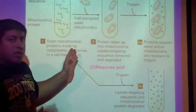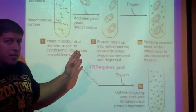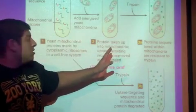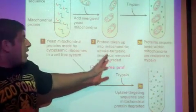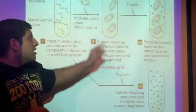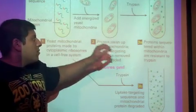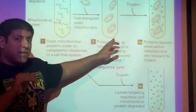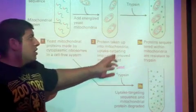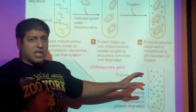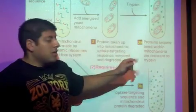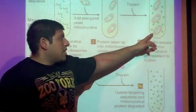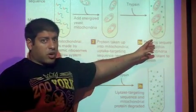Once that protein has been fully translated, we now add mitochondria to the test tube, and what we see is that the protein is able to get into the mitochondria. To confirm it's fully inside, we add our enzyme — in this case a protease, trypsin — and the protease is unable to gain access to the protein to destroy it.